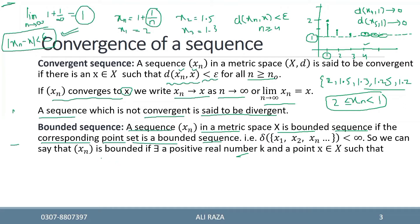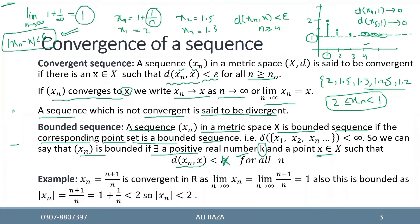دوسرے لفظوں میں، we can say that sequence s_n is bounded if there exist a positive real number k and a point x such that d(x_n, x) < k for all n. یہ definition convergency سے ملتی ہے لیکن boundedness کے لیے k لکھتے ہیں۔ مثال کے طور پر وہی sequence لیں جو اوپر discuss کی: یہ convergent ہے کیونکہ اس کی limit one ہے، اور bounded ہے کیونکہ اس کی values two سے کم ہیں۔